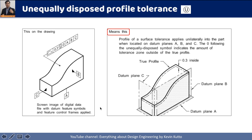In the second example, the value after the circled U symbol is 0. The total tolerance is the same, but because the value is 0, the entire tolerance zone is disposed inside the given boundary — there is no offset to the outside. That is why you see the two tolerance planes separated by 0.3 entirely inside the boundary.